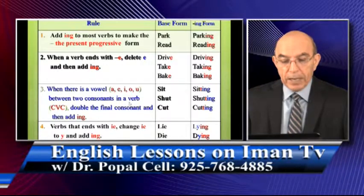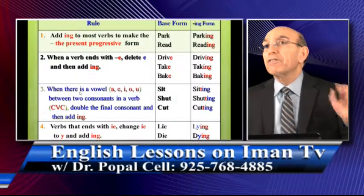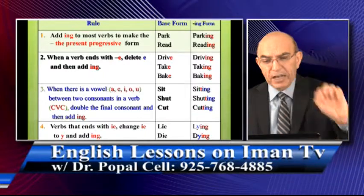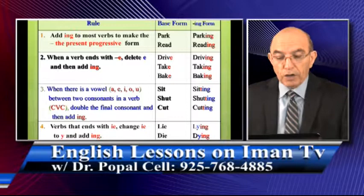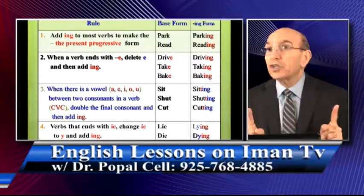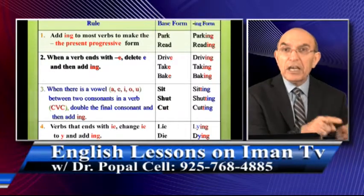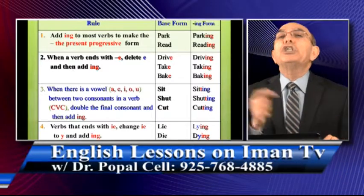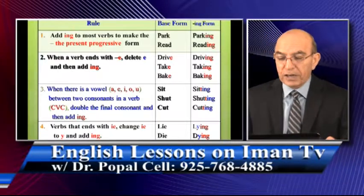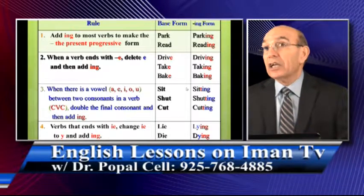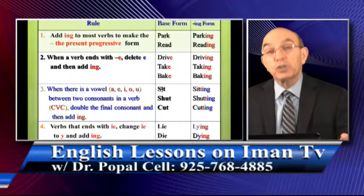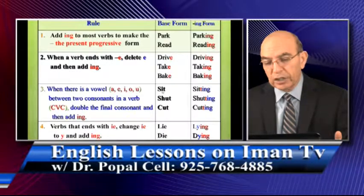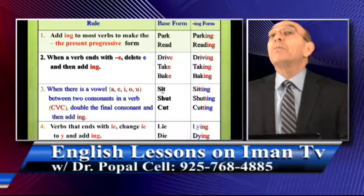Rule number three: when there is a vowel — and the vowel letters in English are A, E, I, O, U — if you have a vowel letter between two consonant letters, we call it CVC (consonant-vowel-consonant). When you add '-ing,' you have to double the final consonant. For example, 'sit' becomes 'sitting' — you have to have double 't.' Why? Because 'i' is a vowel between two consonants: 's' is a consonant, 't' is a consonant, and 'i' is in between. That's why you make a double 't.'